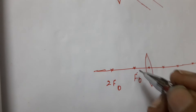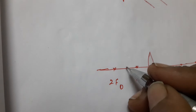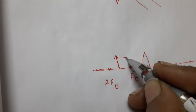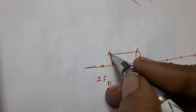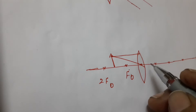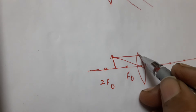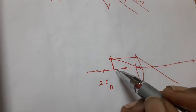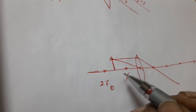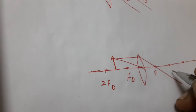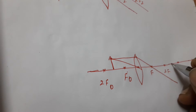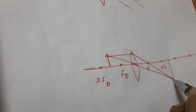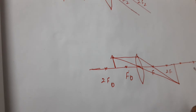I am going to keep an object in between F_O and 2F_O. As usual, the first rule is the ray parallel to the principal axis, and the second rule is it passes through the optic center. After refraction, the parallel ray will pass through the focal point. If you keep the object in between F and 2F, you will get an image beyond 2F — enlarged.